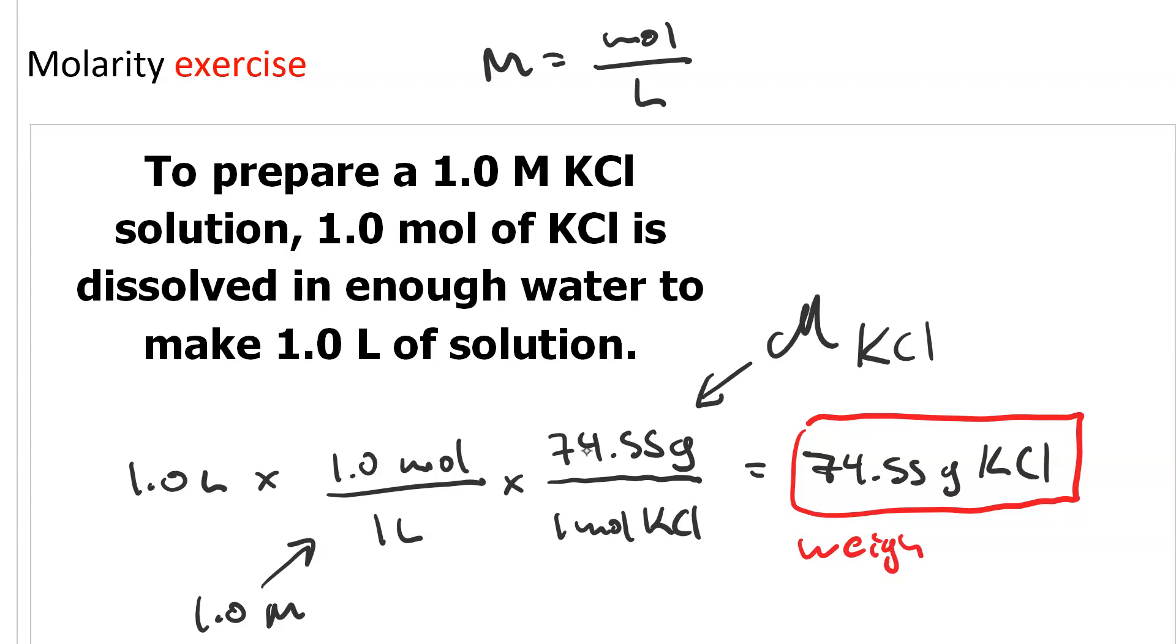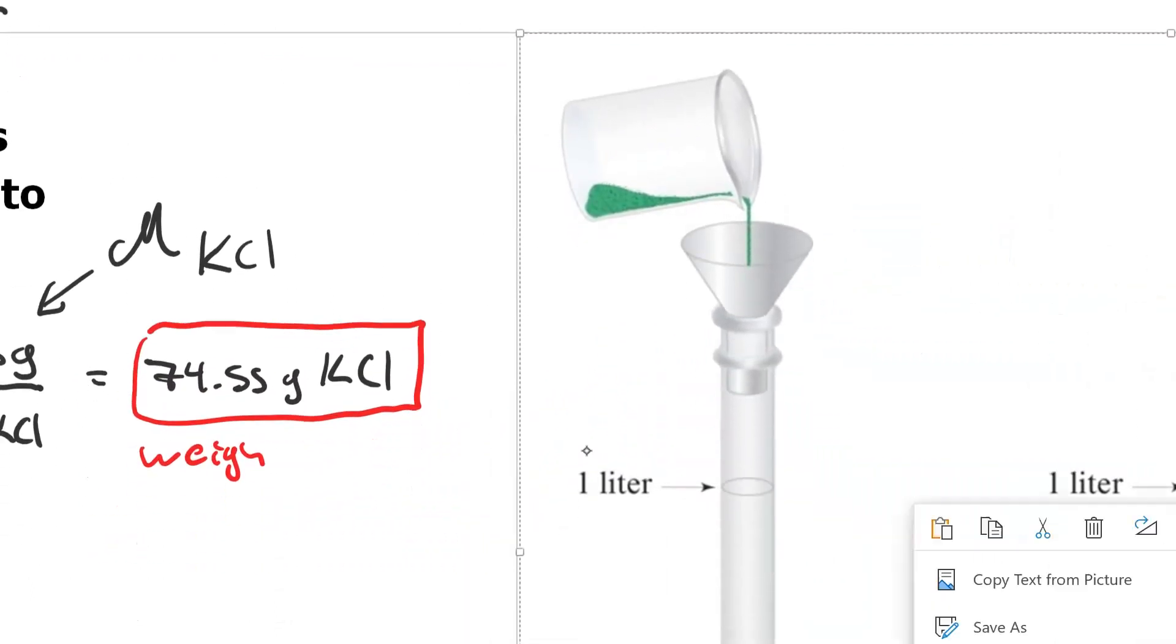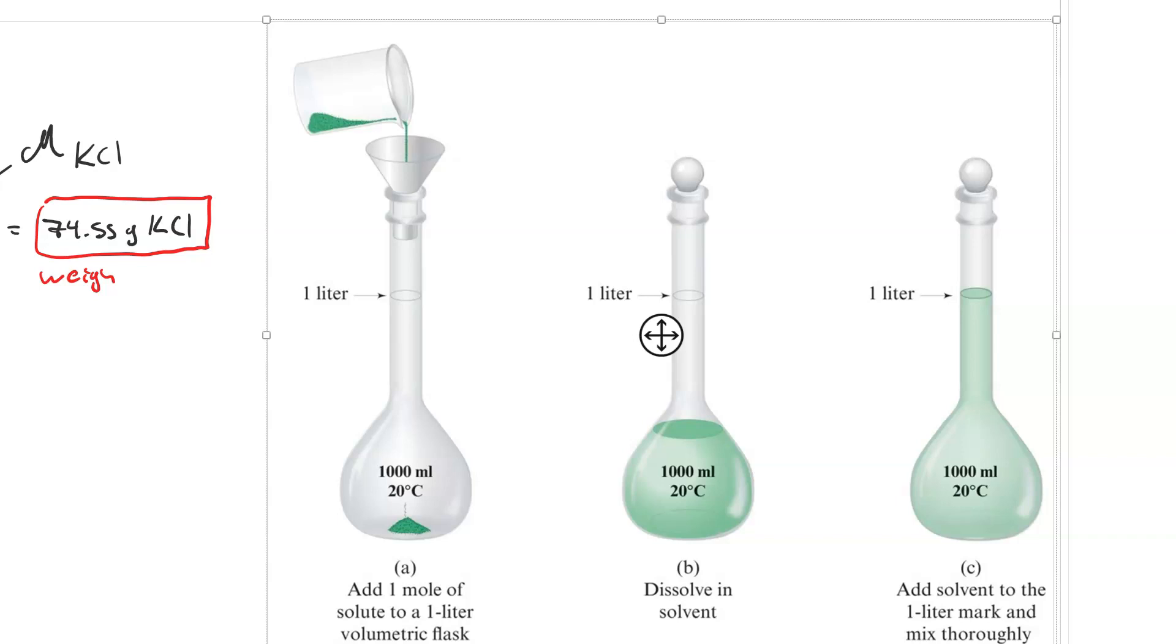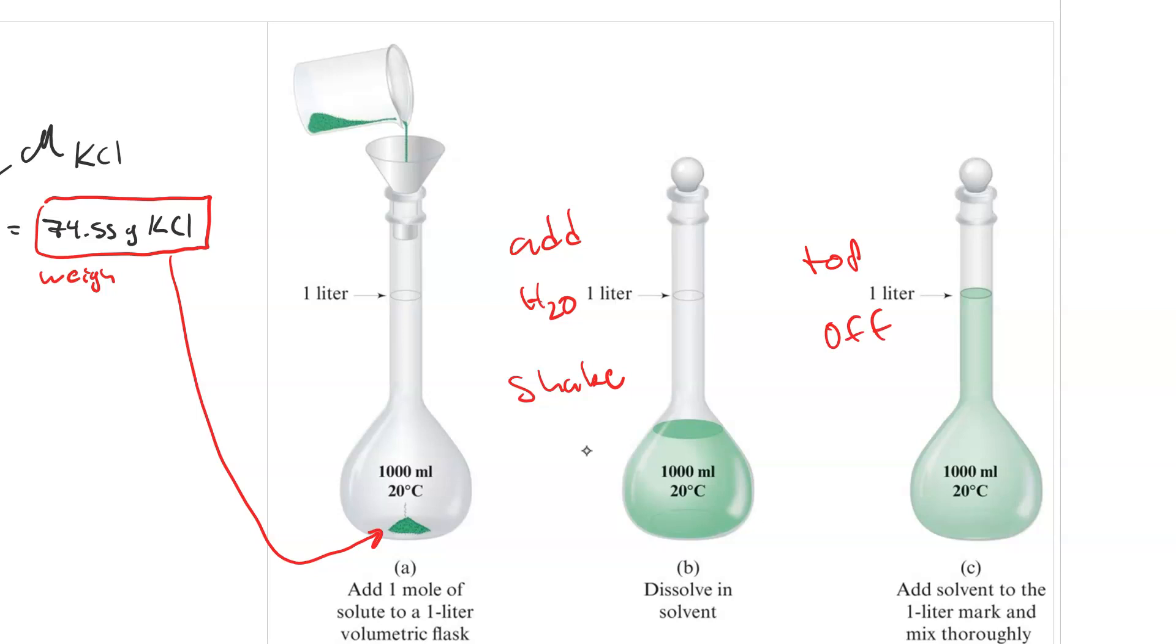So our procedure is we weigh out this much, and then we put it into what's called a volumetric flask. We put our solid down here into this volumetric flask. And then what we do is we add some water and we shake the flask to dissolve our potassium chloride in the solvent. And then we top it off with more water until we get to the calibration mark. So if we wanted to make less of this, we would use a different size volumetric flask, and of course we'd weigh out a smaller amount.